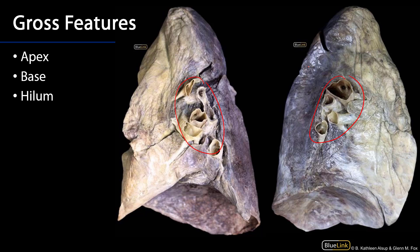The root of the lung is going to consist of the primary bronchi on each side, so the root will have a primary bronchus, pulmonary artery, and pulmonary veins.